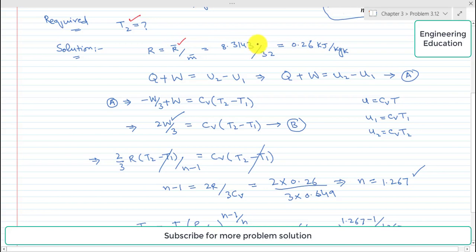And the value of molar mass is given which is 32 kilogram per kilomole. So when we simplify this we get 0.26 kilojoules per kilogram per Kelvin, which is the value of R.